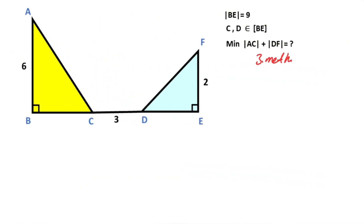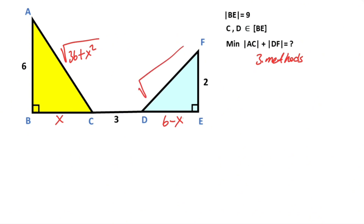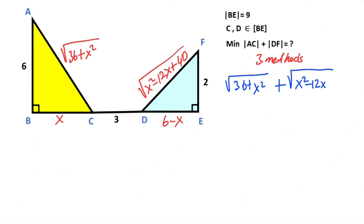Now we will calculate the minimum value for the sum of x and y using a third method. First, let's call here x, which means here must equal 6 minus x. If we apply the Pythagorean theorem for the yellow triangle, we get the hypotenuse as the square root of (36 plus x squared). Likewise for the blue triangle, the hypotenuse will be the square root of (x squared minus 12x plus 40). Therefore the length of AC plus the length of DF must equal the square root of (36 plus x squared) plus the square root of (x squared minus 12x plus 40).